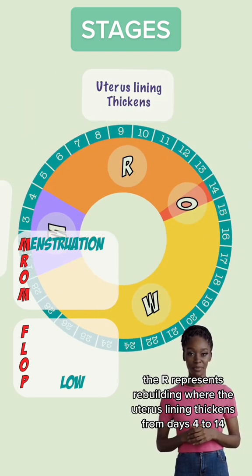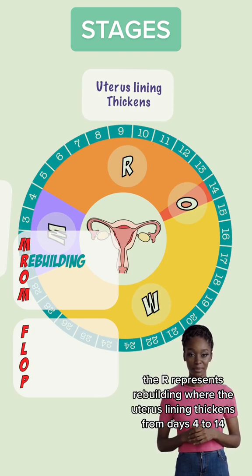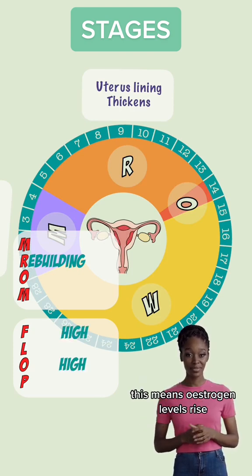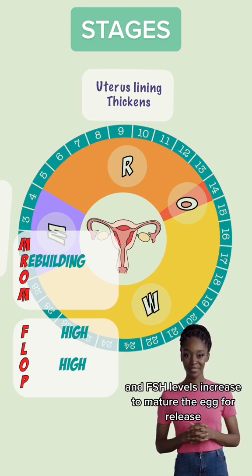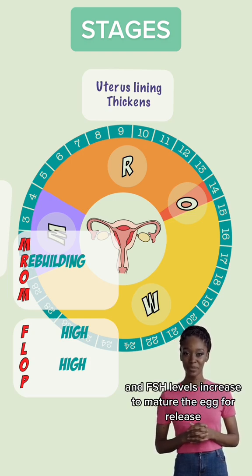The R represents rebuilding, where the uterus lining thickens from days 4–14. This means estrogen levels rise, and FSH levels increase to mature the egg for release.